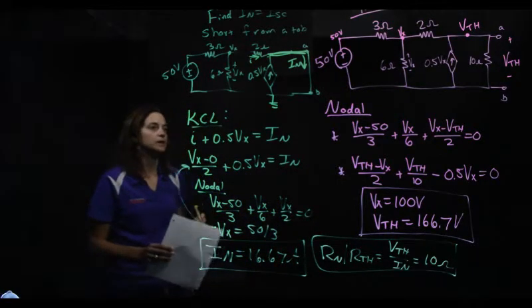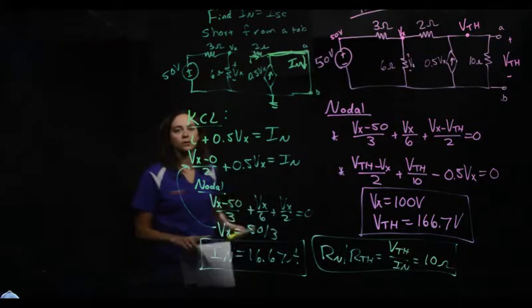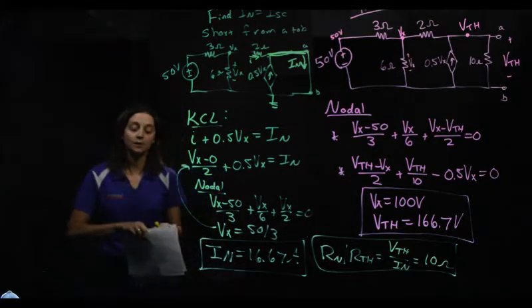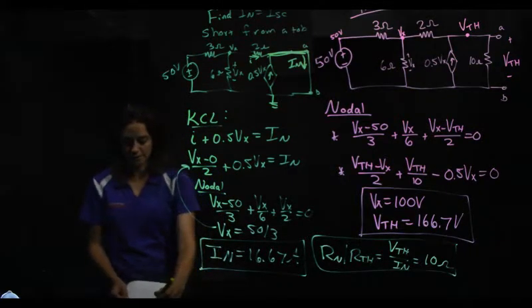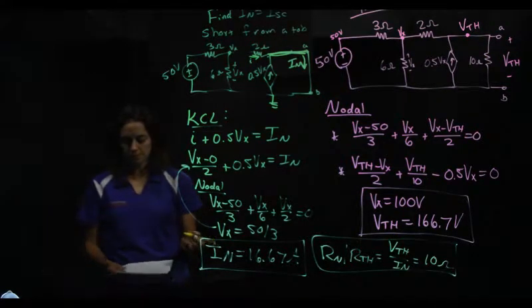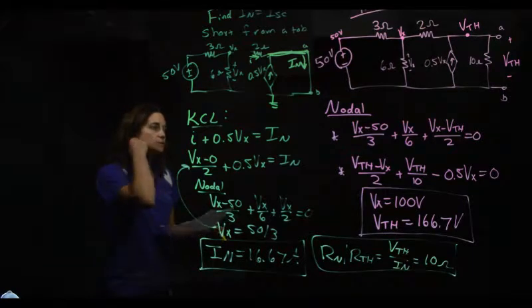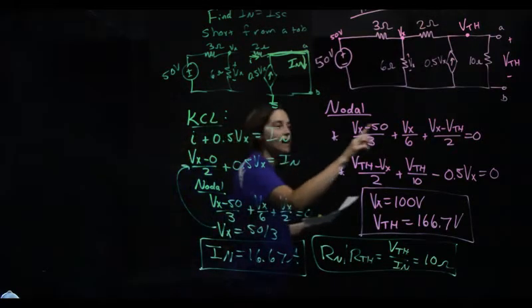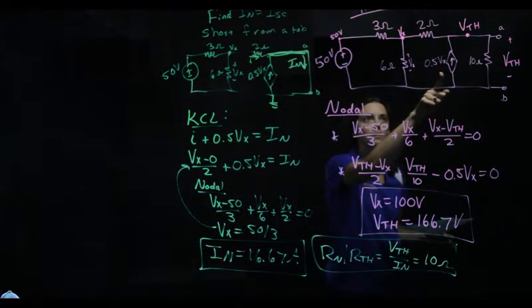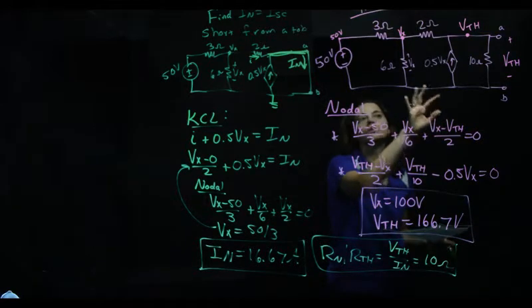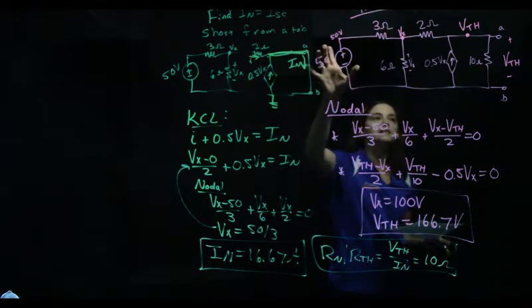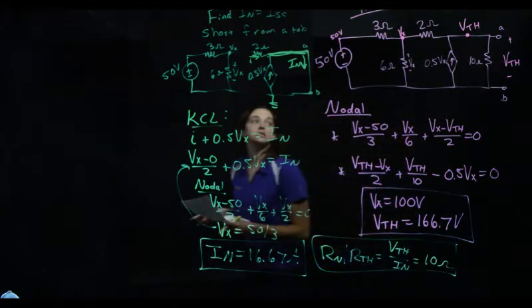We're going to look at the other method. So we're going to find R-Norton, R-Thevenin, and use that to find I-Norton. Again, lots of options for these problems. So for that method, that's when we add the test voltage. So remember, we have a dependent source. We can't deactivate a dependent source. That has to stay there. So we're going to deactivate this and add a test voltage out here.